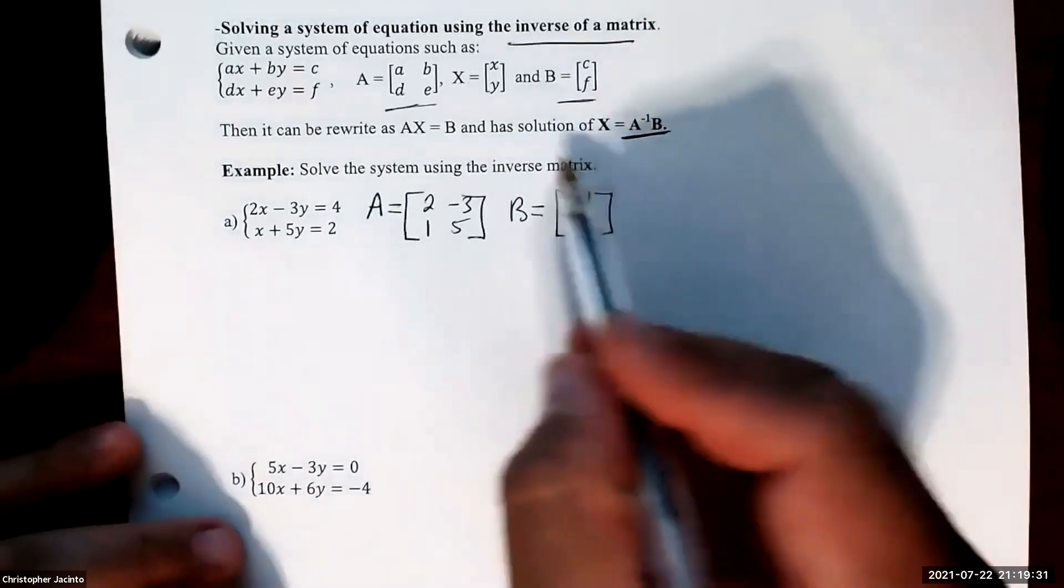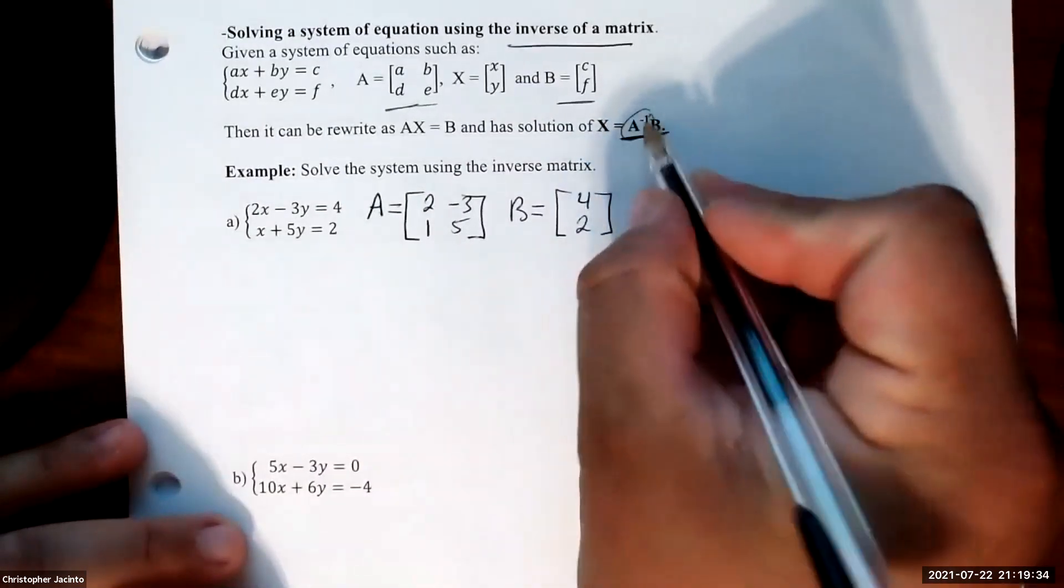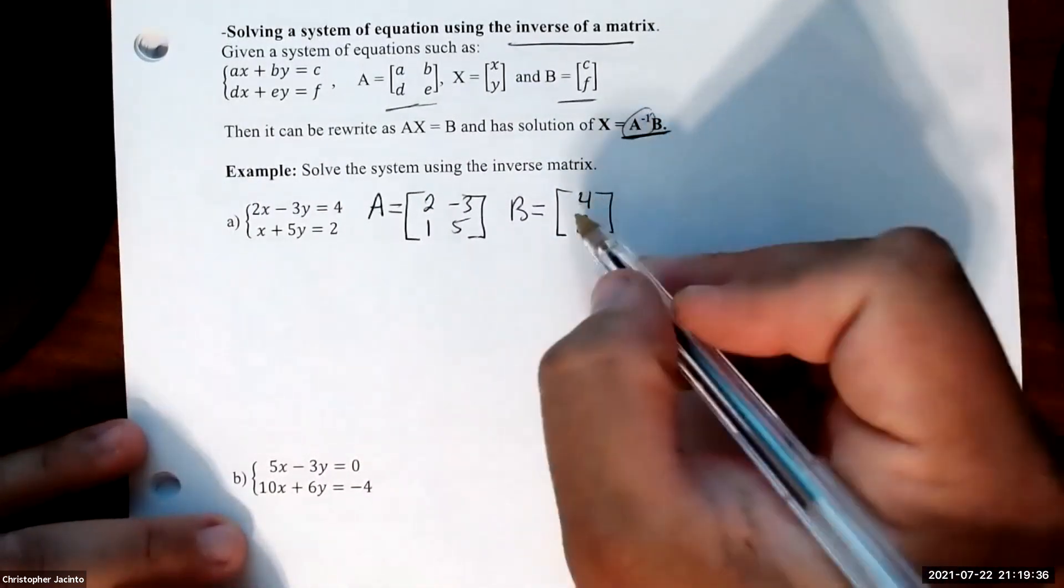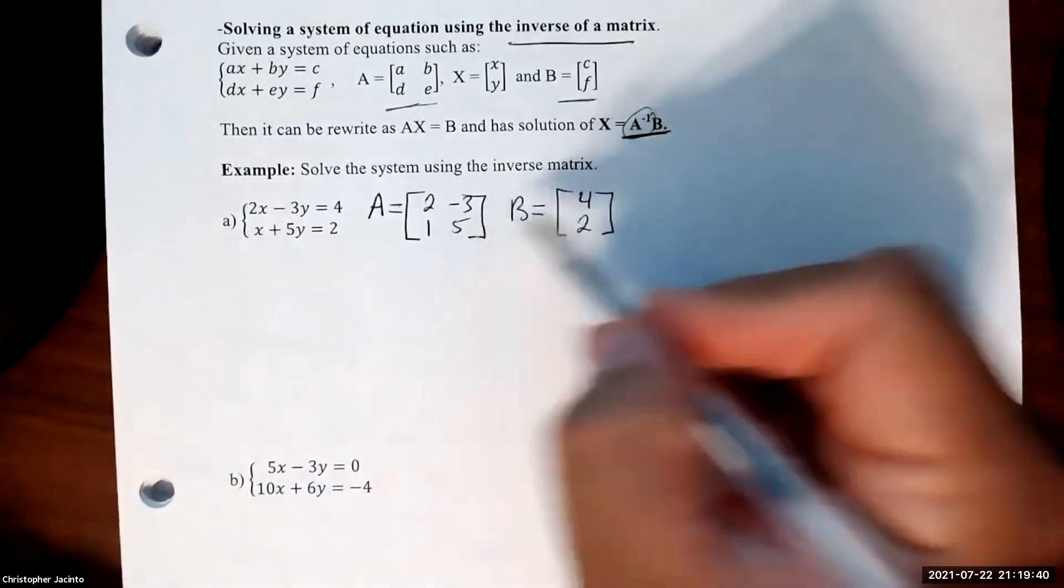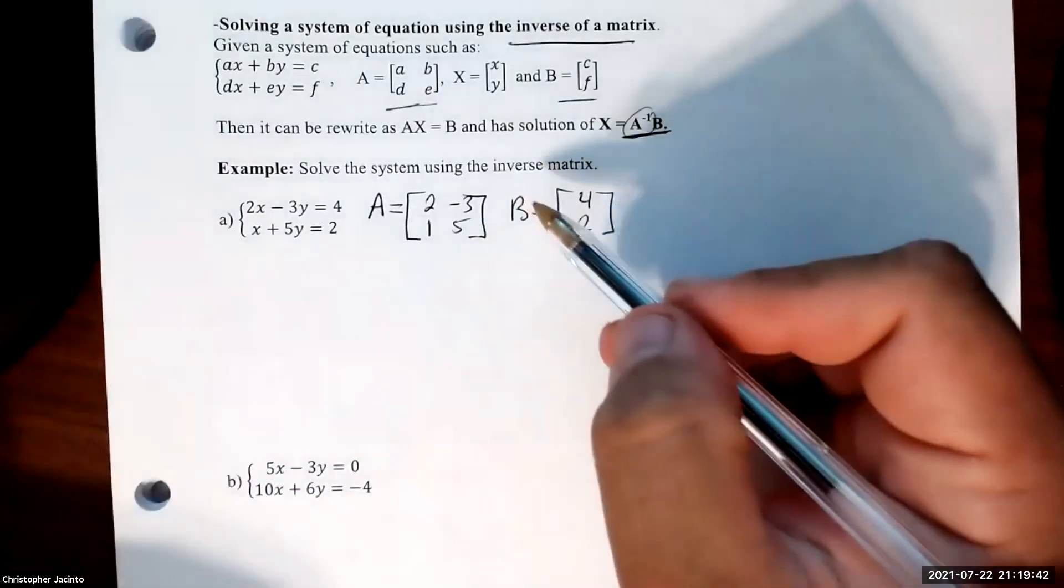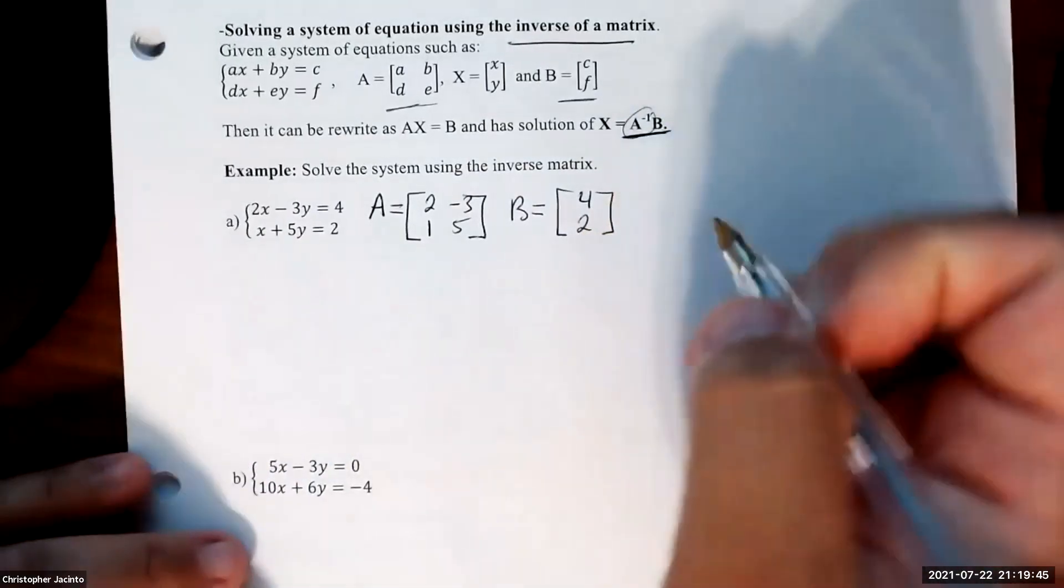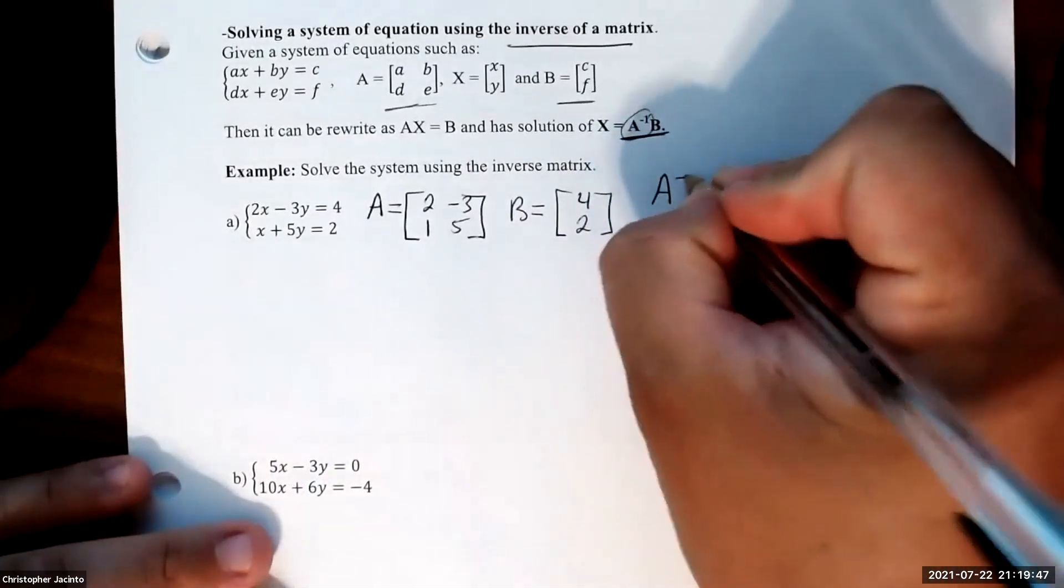Matrix B is what the equations are equal to, so 4 and 2. Now to find x and y, we're going to first find its inverse and then multiply to this value here.